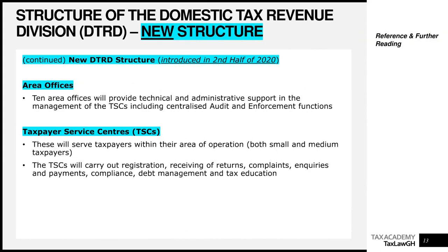The Area Offices — the plan is to have 10 of them — will provide technical and administrative support in the management of the taxpayer service centres, including centralized audit and enforcement functions. GRA is building a more efficient system: the Area Offices coordinate audit, enforcement, and collection functions, freeing the taxpayer service centres to focus on direct taxpayer services. Existing Small Taxpayer Offices and Medium Taxpayer Offices are being rebranded to Taxpayer Service Centres.